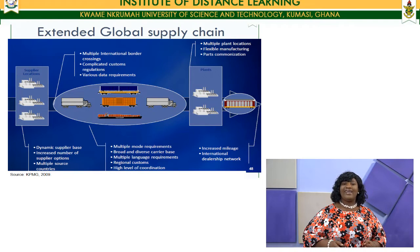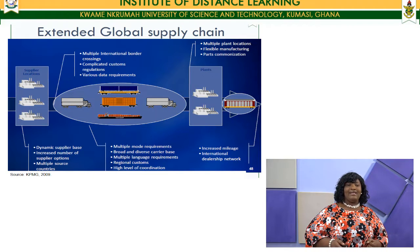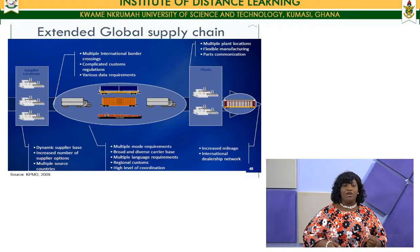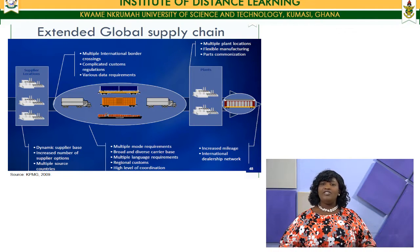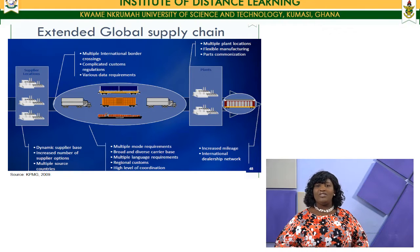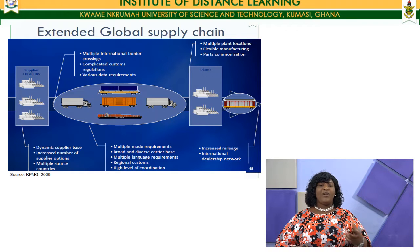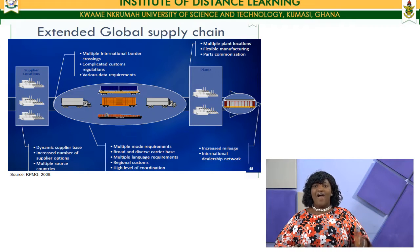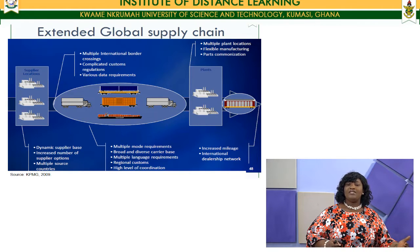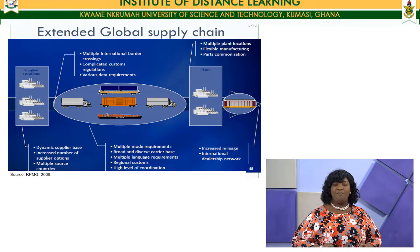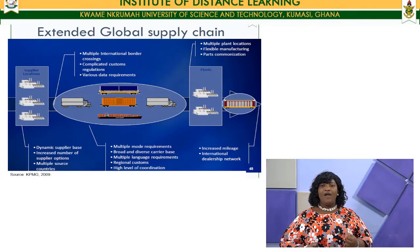In an extended global supply chain, the upstream of most organizations begins to experience a very dynamic supplier base — one that keeps changing because of social, cultural, economic, technological, and political issues influencing different kinds of suppliers in different environments. All these add to the complexities we experience. The technological changes in different environments also add to the dynamism in terms of the pool of suppliers we are tapping resources from.